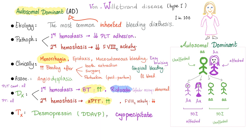For treatment: give desmopressin, because it will increase the expression of von Willebrand factor. Cryoprecipitate contains von Willebrand factor. You can also try fresh frozen plasma, because it contains von Willebrand factor. Give the patient what they are missing.